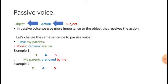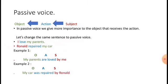For 'Ronald repaired my car' — the format is object plus action plus subject. The object is 'my car,' which goes at the beginning. The action comes in the middle, and the subject goes at the end. So 'Ronald repaired my car' changes to 'My car was repaired by Ronald.' That's the introduction to passive voice — we give more importance to the object that receives the action, more than the person who performed it.